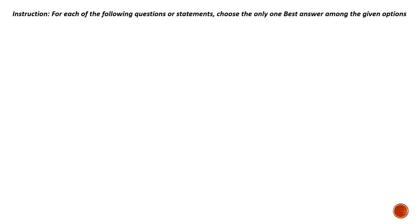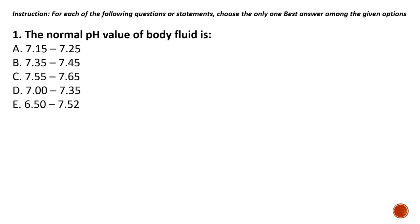The instructions of the exam say: for each of the following questions or statements, choose the only one best answer among the given options. Question number one: the normal pH value of body fluid is — the answer is option B, which is 7.35 to 7.45, which is the normal pH range for blood.